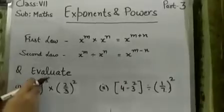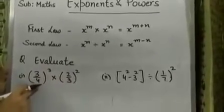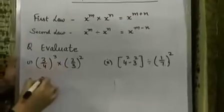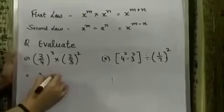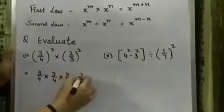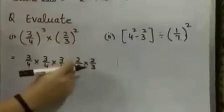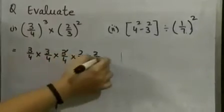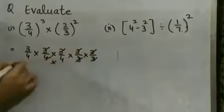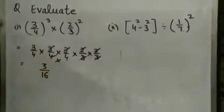Now the next question is evaluate. In the first question, the bases are not same — here the base is 3 by 4, and here it is 2 by 3, so we are going to expand it. 3 by 4 raised to power 3 becomes 3 by 4 multiplied by 3 by 4 multiplied by 3 by 4. For 2 by 3 raised to power 2, we have 2 by 3 multiplied by 2 by 3. The 3s cancel, leaving 2 twos as 4 in the numerator, and 4 fours are 16 in the denominator, so the answer is 3 by 16.